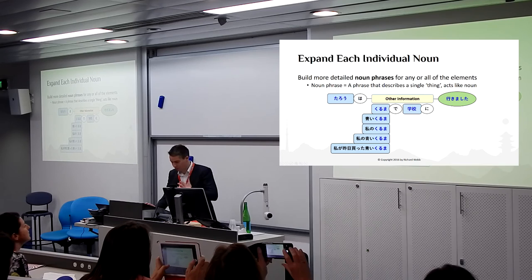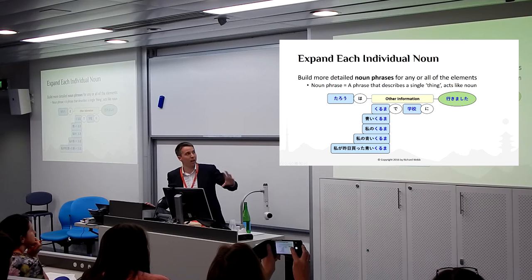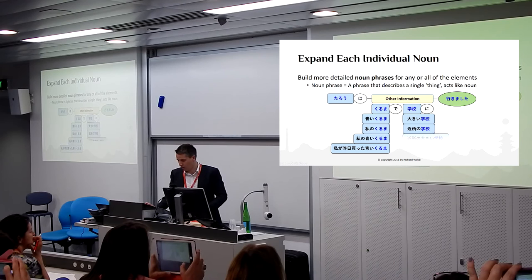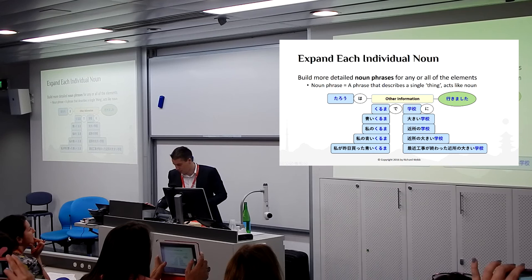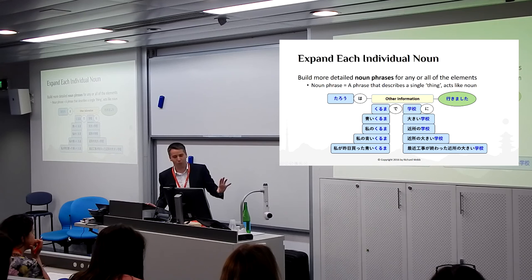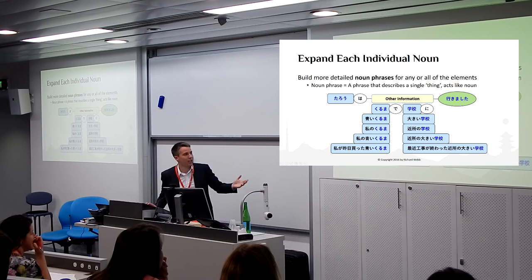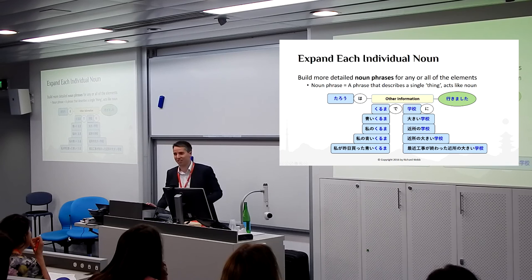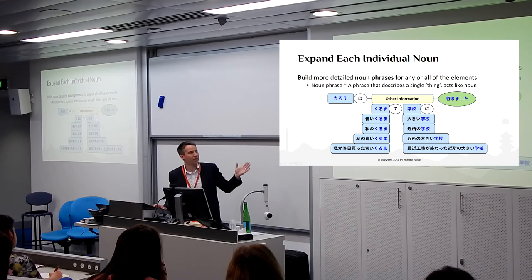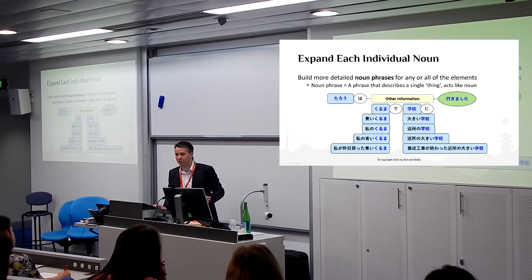And of course we can do the same with 学校. So we can say 太郎は車で青い学校に行きました, or 太郎は車で近所の学校に行きました, or 太郎は車で近所の青い学校に行きました, or 太郎は車で最近工事が終わった近所の青い学校に行きました. Because each of these are essentially isolated from each other, we can use any of these in any combination. And also because they're in the other information section, we can swap it around — we can put the destination before the means: 太郎は近所の学校に私の青い車で行きました.